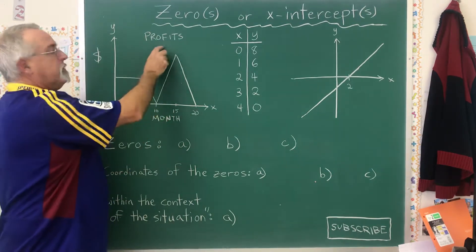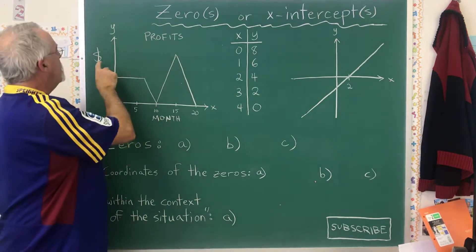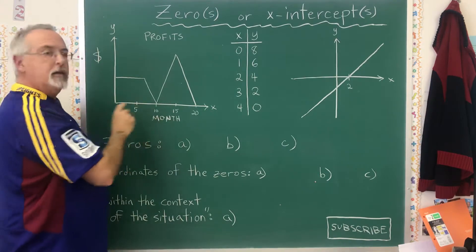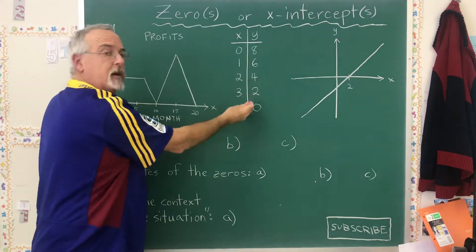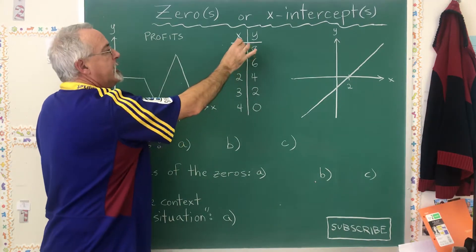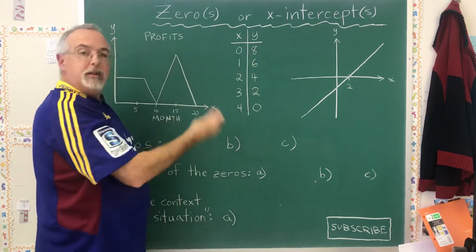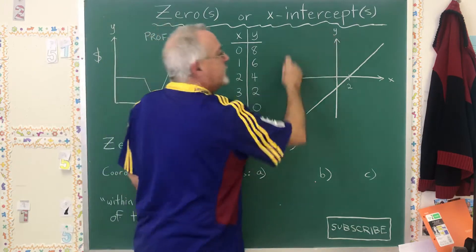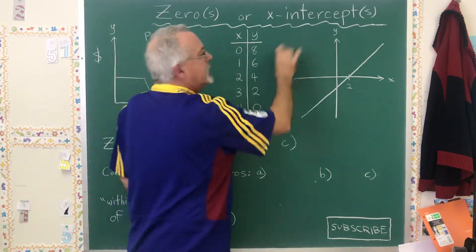Here we have a situation where profits are being shown with dollars on the y-axis and months on the x-axis. And here we have a table of values that's not related to this graph. It doesn't have a situation given. And here we have another graph, again unrelated, that doesn't have a situation given.